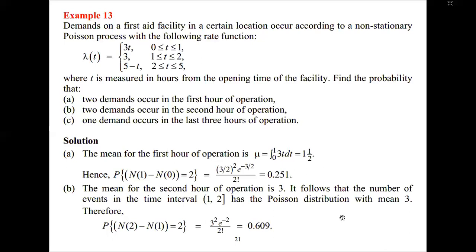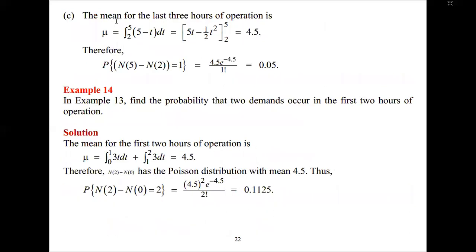For part C, we find the probability that one demand occurs in the last three hours of operation — that is, between time two and five. We integrate five minus T with respect to T from two to five, and that gives us 4.5. So the mean is 4.5. The probability that within the interval two to five only one event occurs is: 4.5 raised to the power one, times e raised to the power minus 4.5, over one factorial — which gives 0.005.